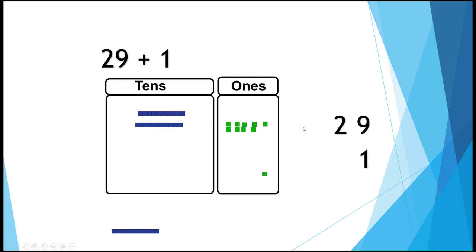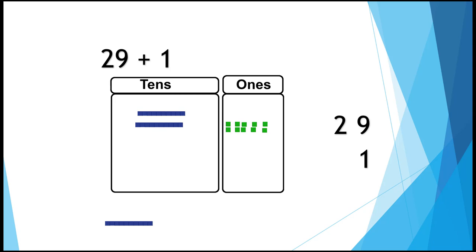But what if we're adding something even bigger? 29 plus 1. Of course, we could just count up and say 29, 30. But we can also swap out those 10 ones for 1 ten. Or put down the 0, carry the 1. 2 tens plus 1 ten is 3 tens. 29 plus 1 is 30.